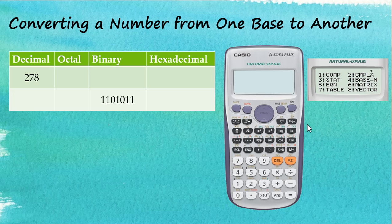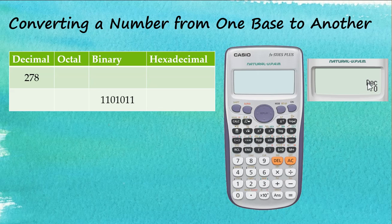Once we tap on 4 for Base-N mode, we can see on the screen that we are in the decimal system. We start with decimal, so we insert the number 278 into the calculator and then tap equal.